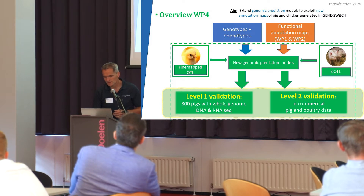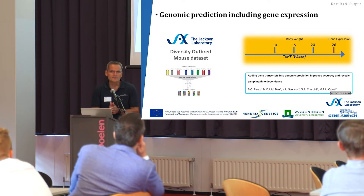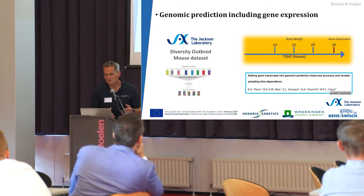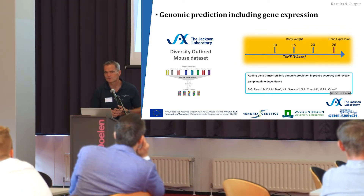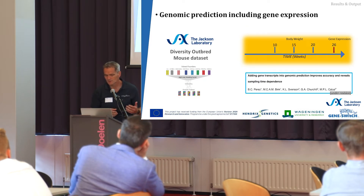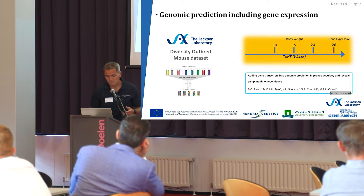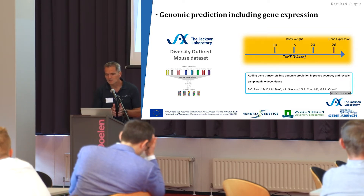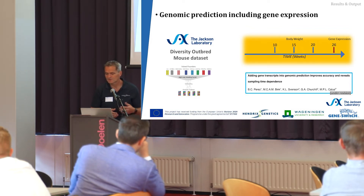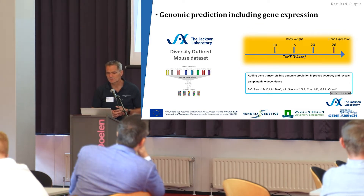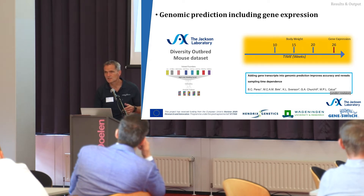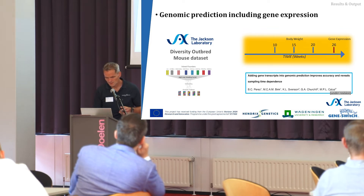The first thing we did in the project was to develop new models — thinking about what we can expect if we include gene expression. We started with a dataset from the Jackson Lab in mouse because it was available, had attractive features like gene expression data, many phenotypes, and a lot of functional annotation data already available for mouse. In this example I'll focus on body weight measured at three time points: 10 weeks, 15 weeks, and 20 weeks. Gene expression data comes from liver at week 26, which becomes relevant later. These results are written in a manuscript we have submitted.